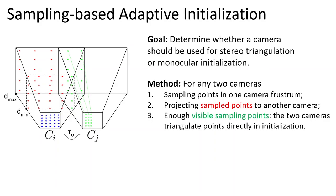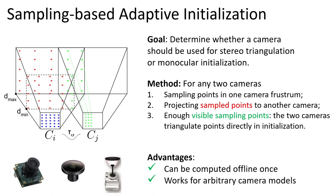Our adaptive initialization scheme determines the most suitable initialization method for the camera systems. For any two cameras, we sample the camera frustum of one camera, project the sample points to the other, and determine whether the cameras should triangulate points directly or initialize separately. This method generalizes to arbitrary camera models and frustum shapes. Moreover, this process only needs to be computed offline once.